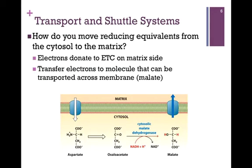We next want to notice that we need to move our reduced cofactors, our electron carriers, from the cytosol to within the matrix, because these carriers donate their electrons to the electron transport chain on the matrix side. So we have two options: we can move the carriers across the membrane themselves, but in that case we have different carriers — it might be NADH, NADPH, FADH2 — and so we would need a different transporter for each carrier. Instead, we transfer the electrons from the carrier to some molecule, and then transport that molecule across the membrane.